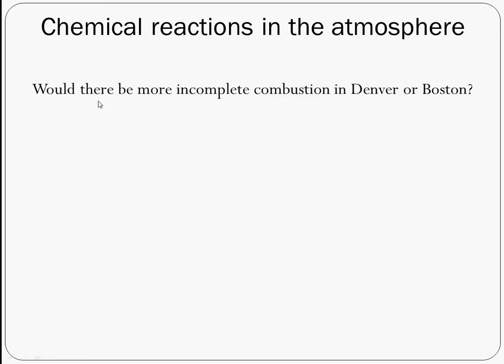Here are some questions to think about. Would there be more incomplete combustion in Denver or Boston? Think about which place might have more oxygen availability and what that means for carbon monoxide and soot production. Also think about why long tunnels are ventilated — if we didn't ventilate a tunnel, that would increase carbon monoxide from incomplete combustion. People particularly care about carbon monoxide because it bonds strongly to hemoglobin in blood, preventing oxygen distribution throughout your body.